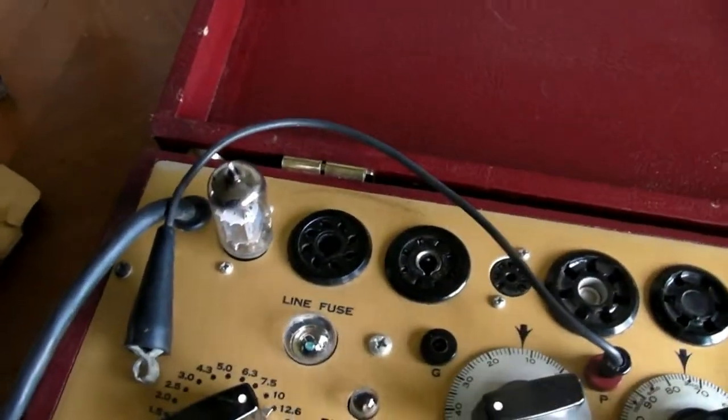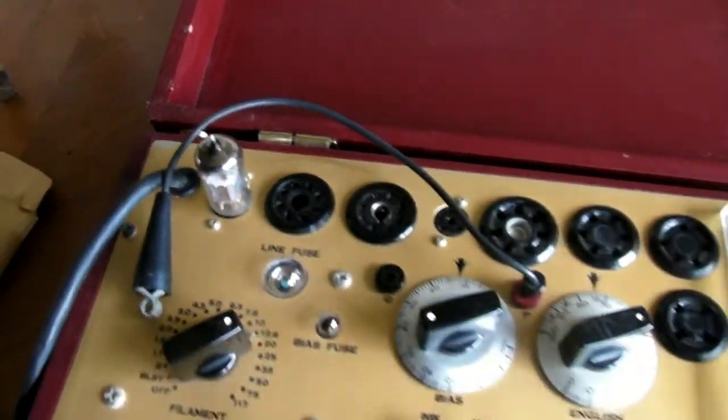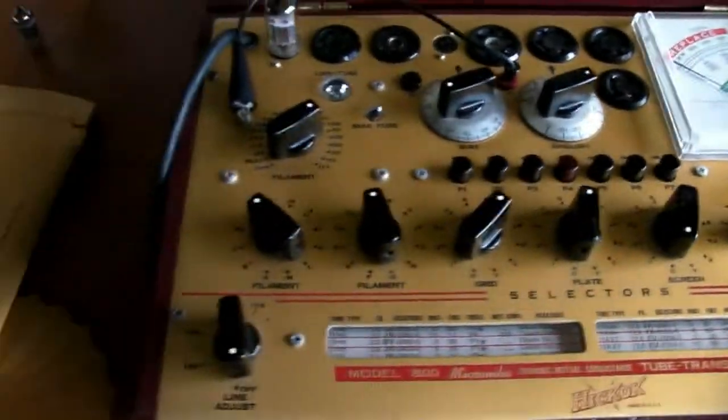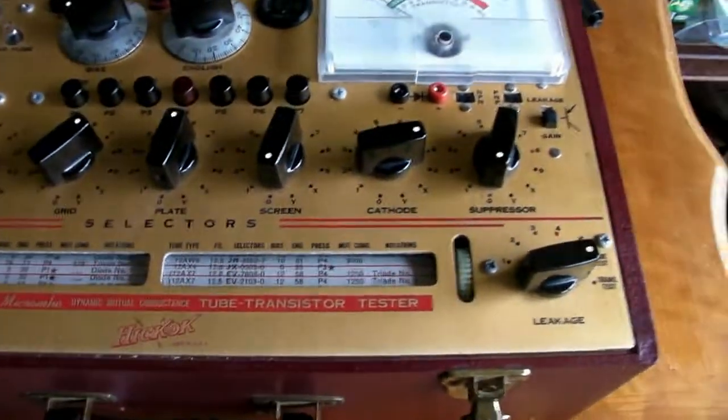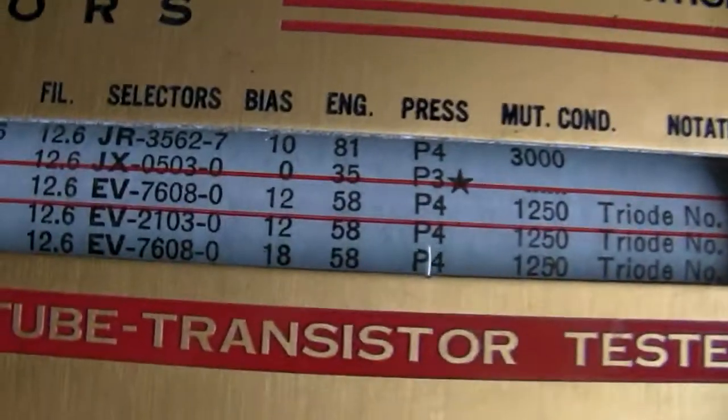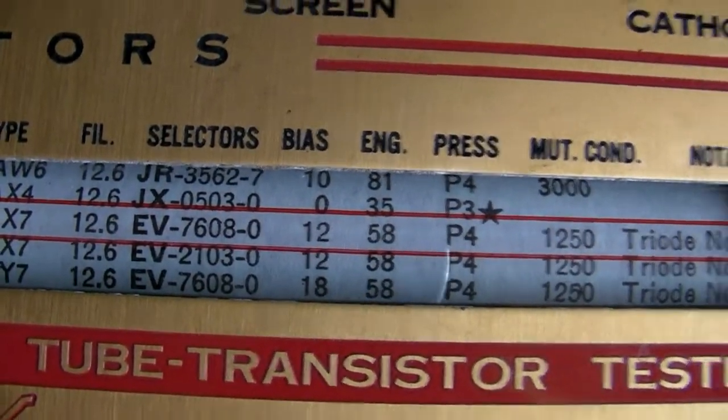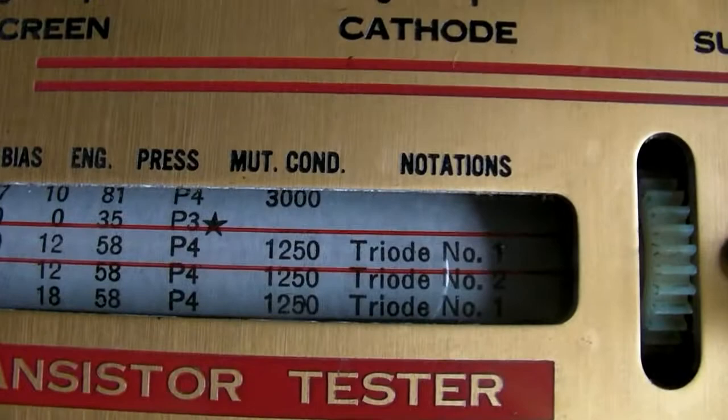Okay, we're going to test the tube now with the Hickok 800. I've got a 12AX7 that's used in the Tormac control system on the jukebox. And these are the settings. I'm going to test the number one triode.